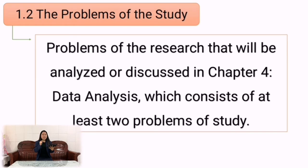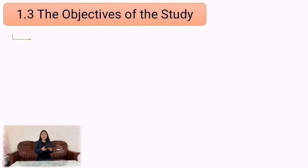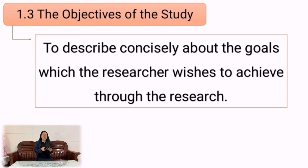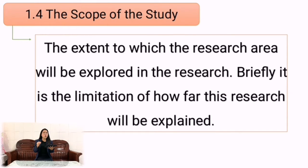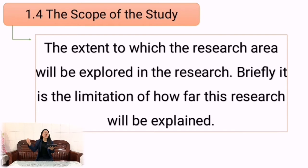In chapter 4, the problems will be discussed in greater depth. The problem should include at least two problems or more. In 1.3, the objectives of the study, it describes consistently the goals which the researcher wishes to achieve from the research. In 1.4, the scope of the study is the extent to which the research area will be explored — briefly, it is the limitation of how far the research will be explained.